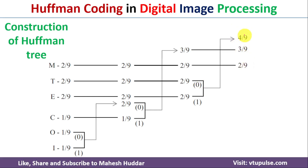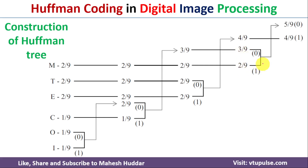We again find the two lowest probabilities: 3/9 and 2/9. Their sum is 5/9. Adding the remaining two probabilities gives us the final root node with probability 1, completing the Huffman tree.